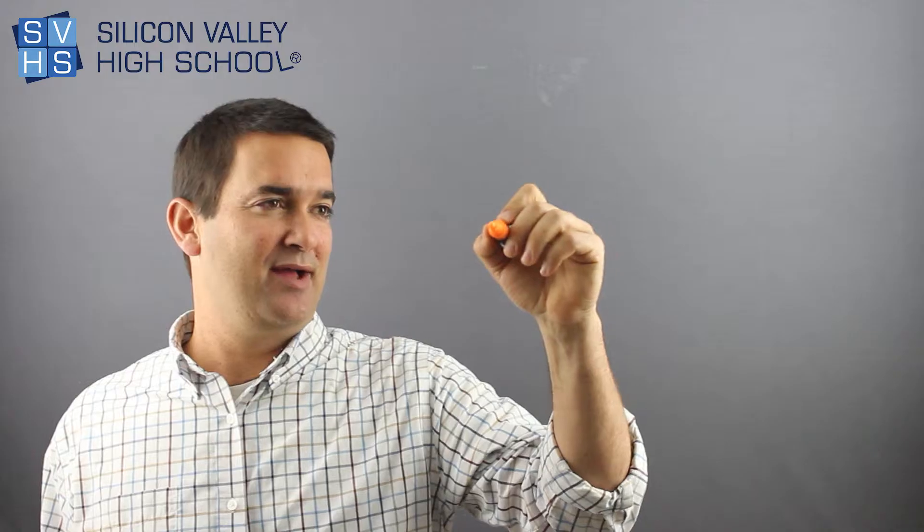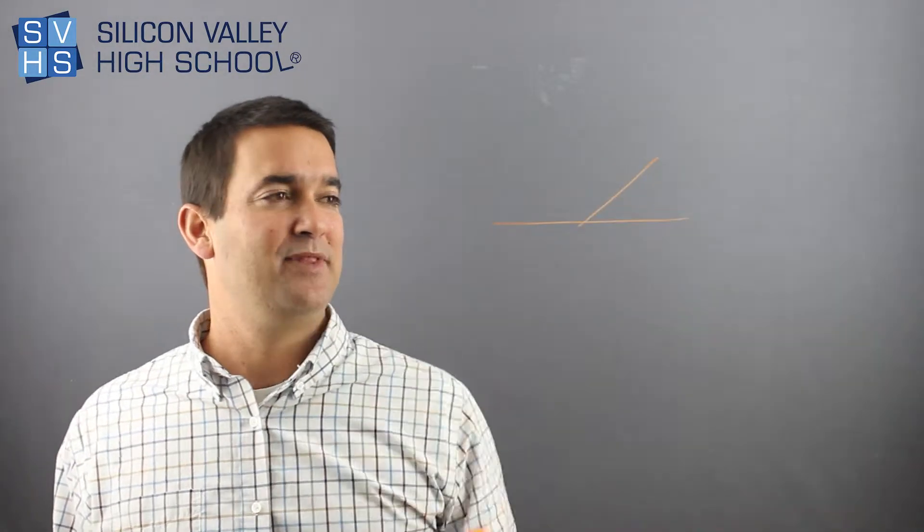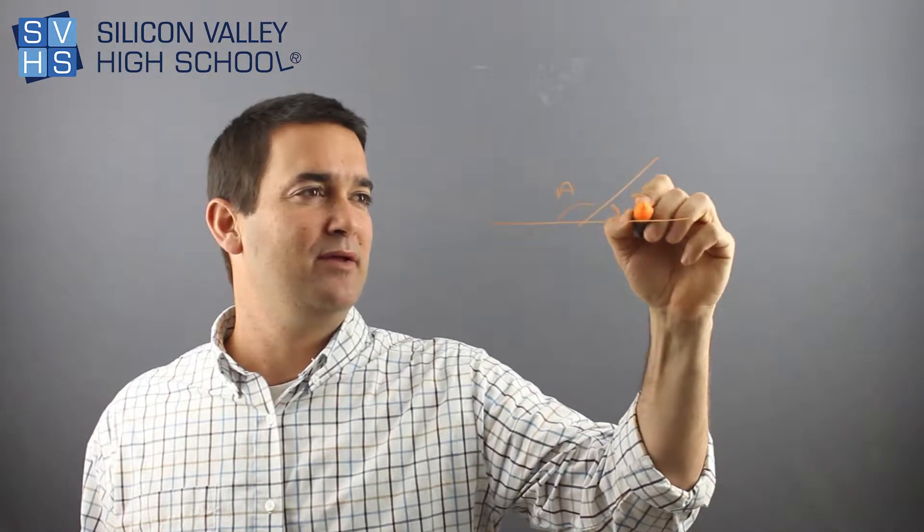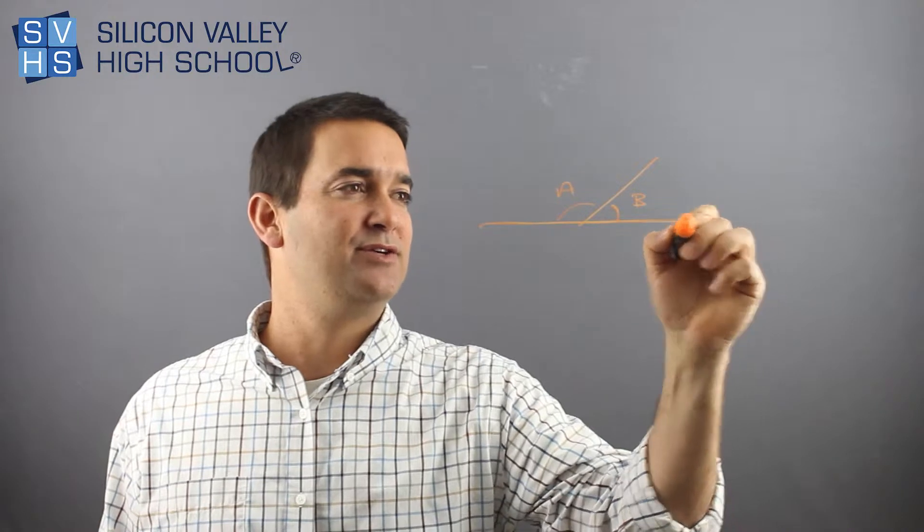A linear pair are any two angles that form a line. If you look at these two suckers right here, these two angles, we'll call them A and B, together they form a straight line.